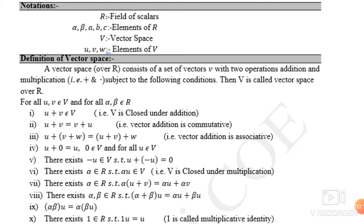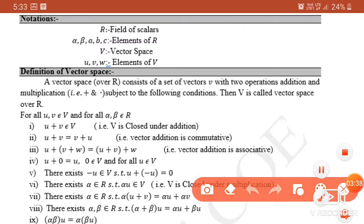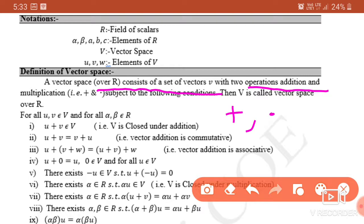Throughout this chapter, R represents scalars — it is a real field. Alpha, beta, A, B, C are elements of R. Capital V is used for vector space, and U, V, W are elements in vector spaces. The definition of vector space is very important. A vector space over R consists of a set of vectors V with two operations: addition (+) and scalar multiplication (·), subject to 10 conditions. If all 10 properties are satisfied, then V is a vector space over R.